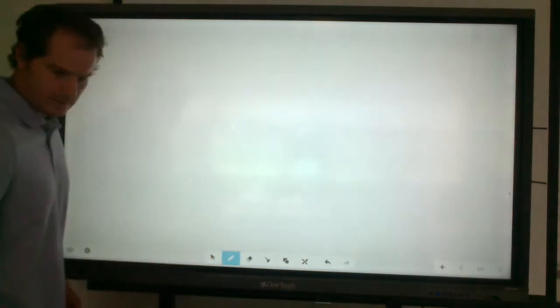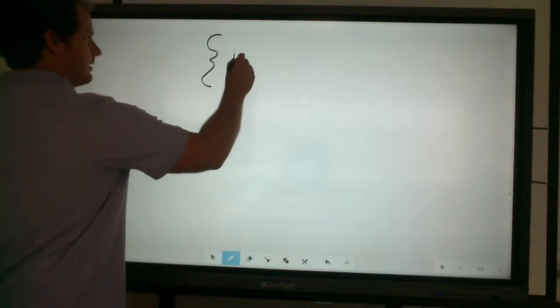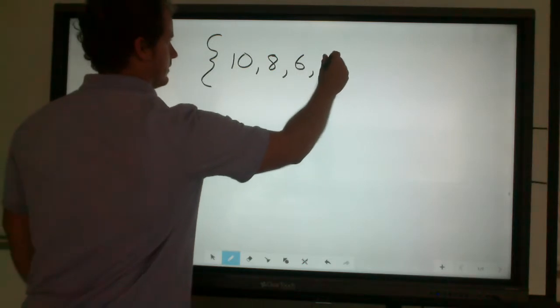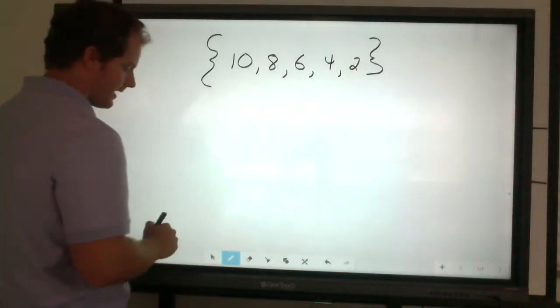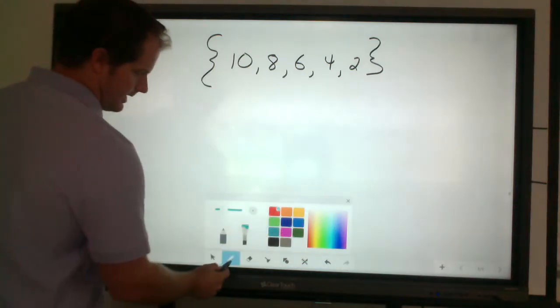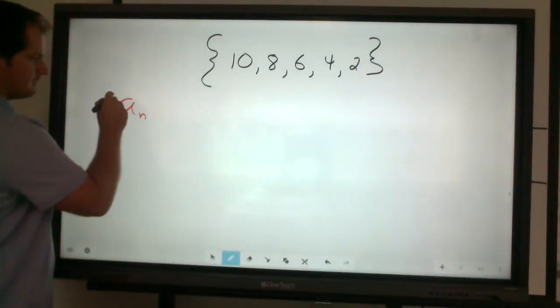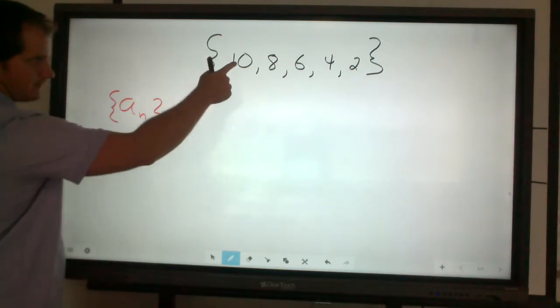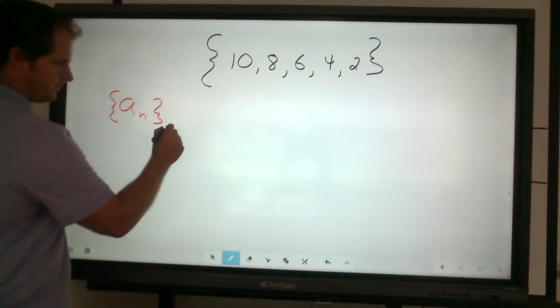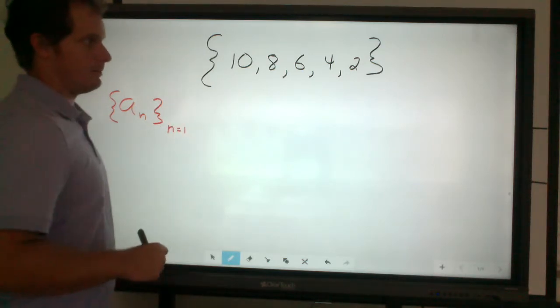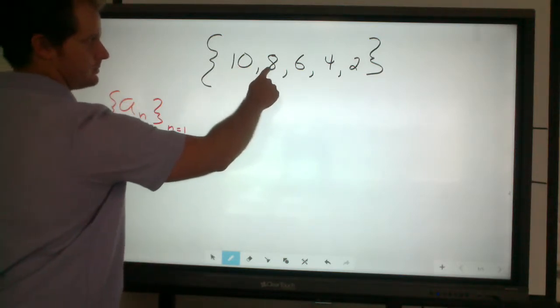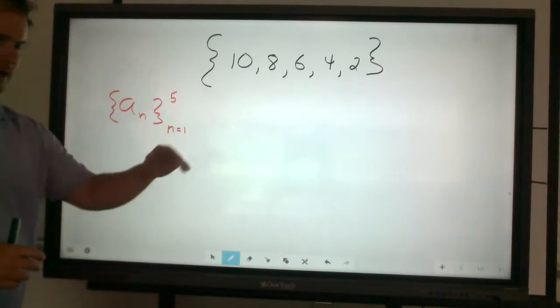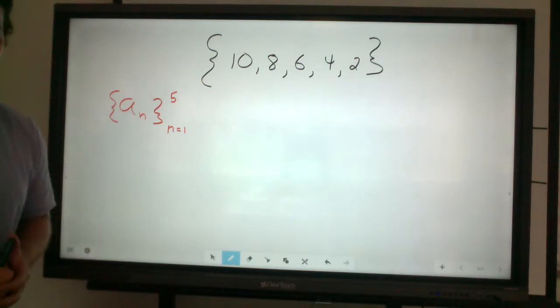I want to do one more example. For this one, we're going to look at kind of a pattern that happens to be decreasing. So, we'll look at a finite set. The first thing I'd like to do is kind of establish what our limits are for that set. In this case, our first term happens to be 10, and that runs to the number 2, which in this case is going to be the fifth term. So, we know that our nth terms, any term that we're looking at, is from the first to the fifth. There's only five possible values.